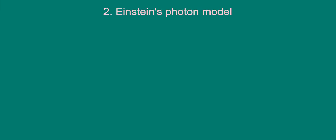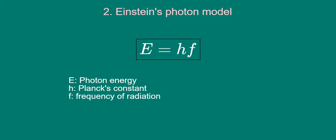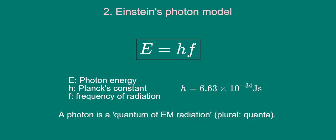In the photon model of radiation, a photon carries energy given by the formula E equals hf. E stands for the energy of the photon, h is Planck's constant, and f is the frequency of the light. Planck's constant is a fundamental constant of nature and has the value 6.63 times 10 to the power of minus 34 joule seconds. We'll see in a follow-up video on the stopping potential how it's possible to measure this. A photon is known as a quantum of electromagnetic radiation.